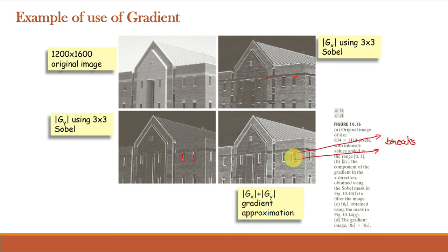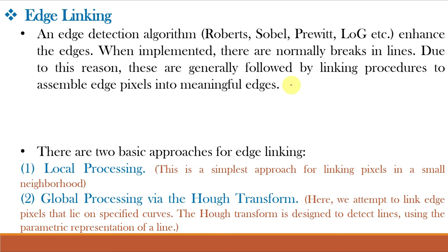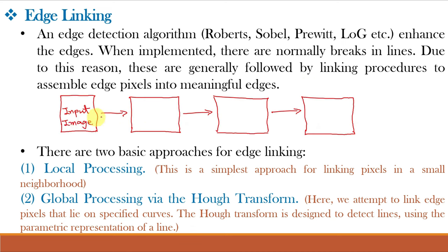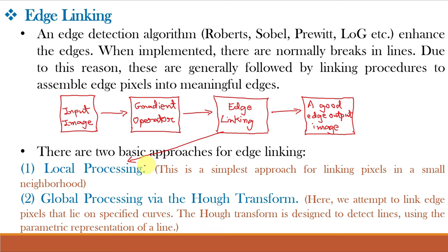These disjoint edges need to be linked, and that is known as edge linking. For our input image we have to apply the gradient operator for edge detection, and after that we have to apply edge linking to obtain a good image. For edge linking there are two basic approaches: local processing and global processing.